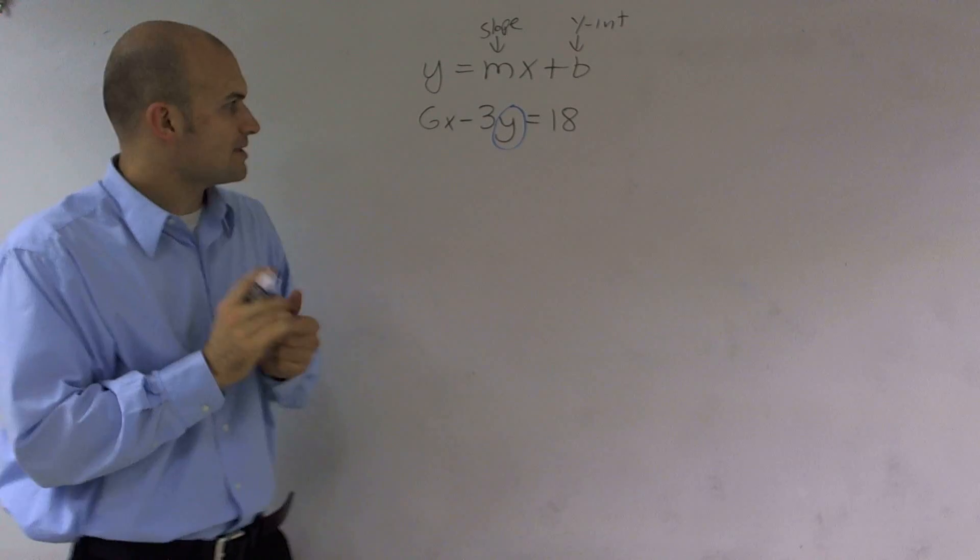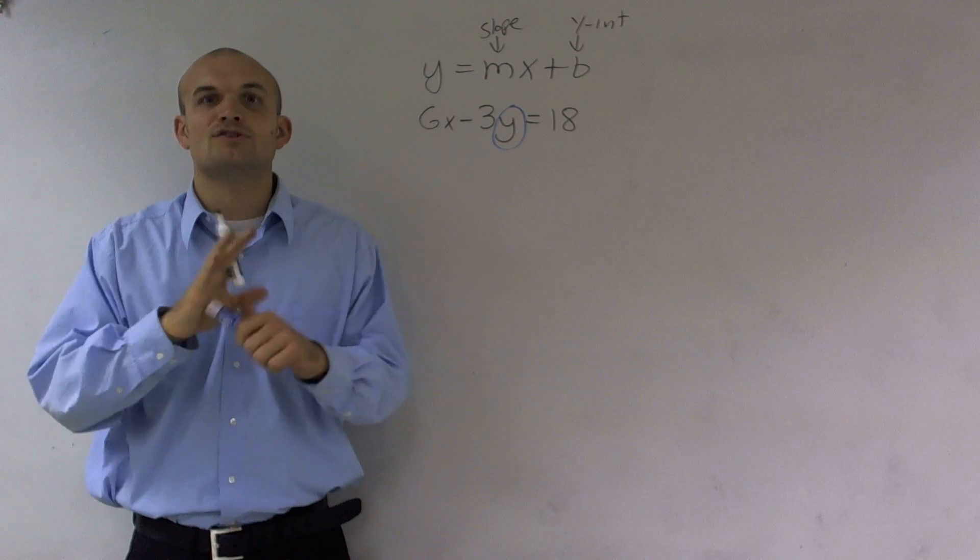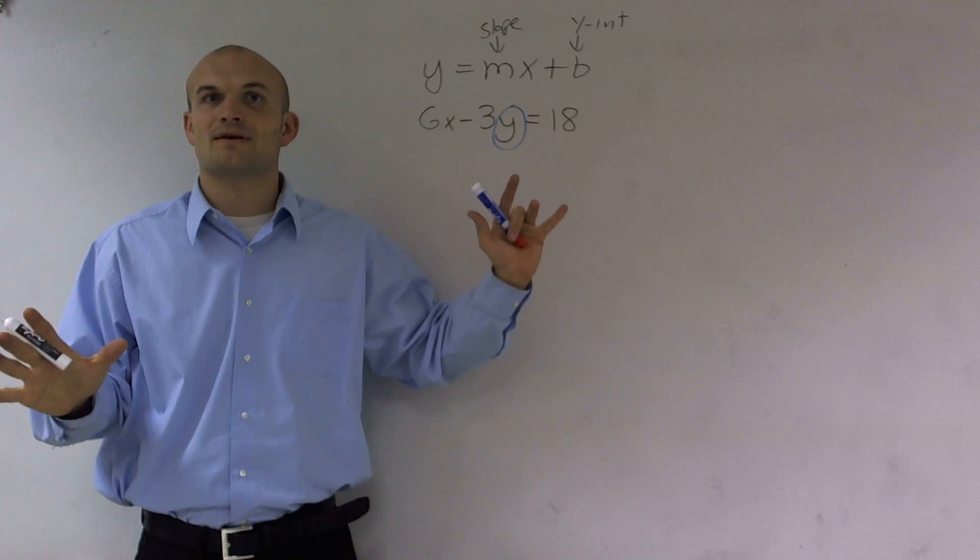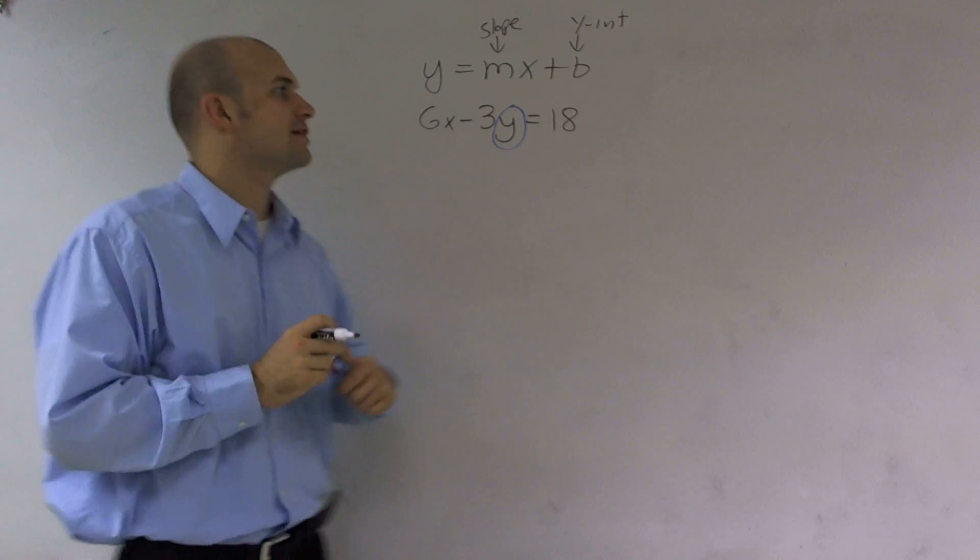If I'm going to get my y by itself, I'm going to circle it. What that's going to tell me to do is don't do anything to it. Leave it where it's at, and then just undo everything that's happening to the variable.